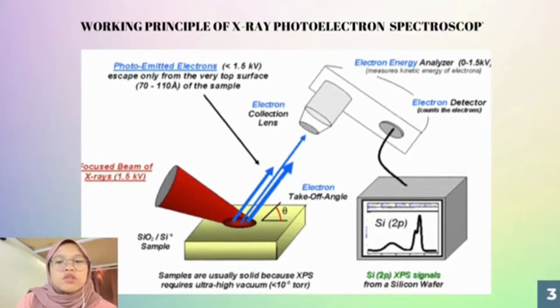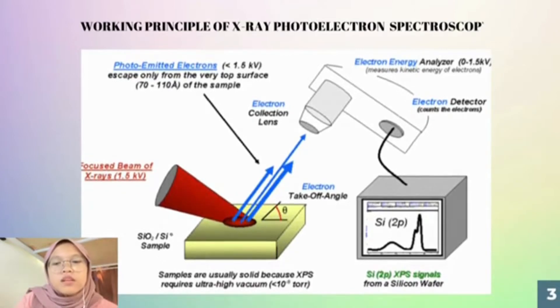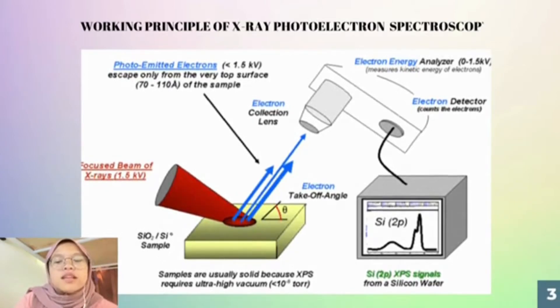In the laboratory setting, ultraviolet photons are produced using a gas discharge lamp, typically filled with helium, although other gases such as argon and neon can also be used.